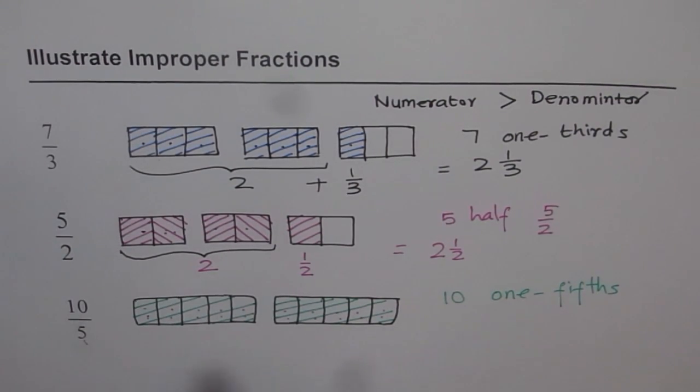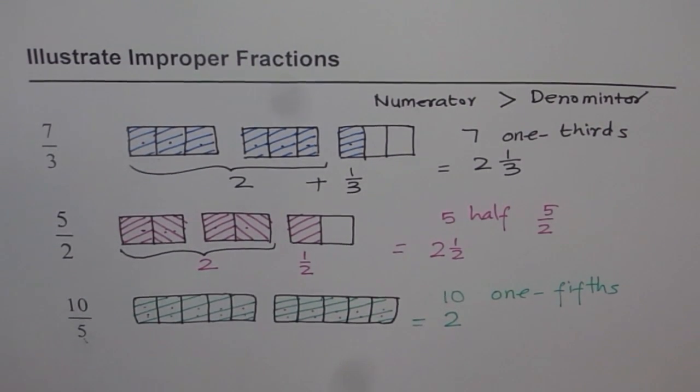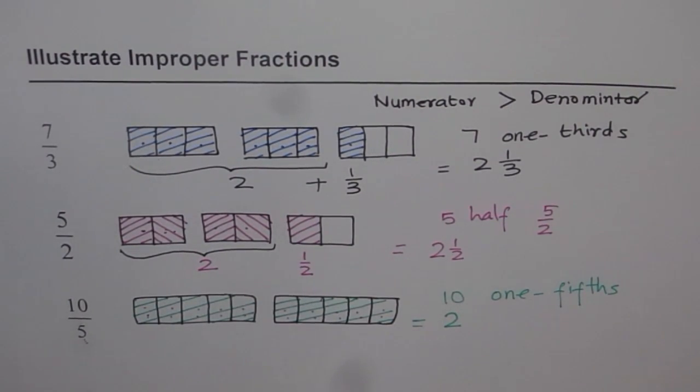That is how we get 10 over 5. And as improper fraction, we can write this as 2 whole. Do you see that? 2 whole, I have been shared.